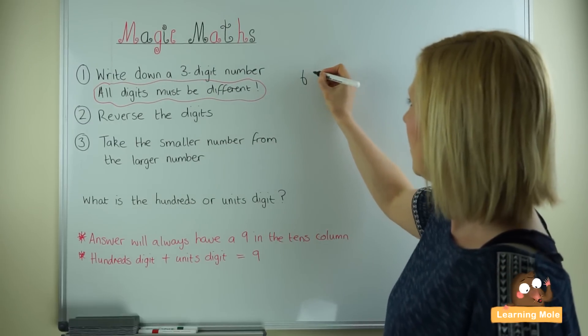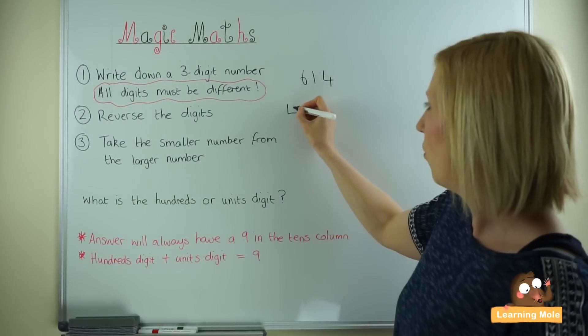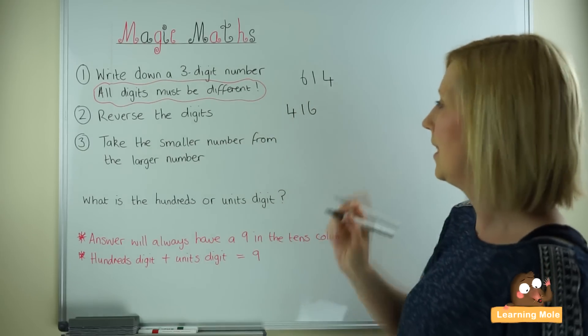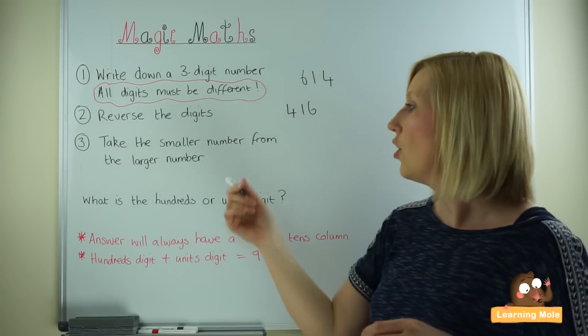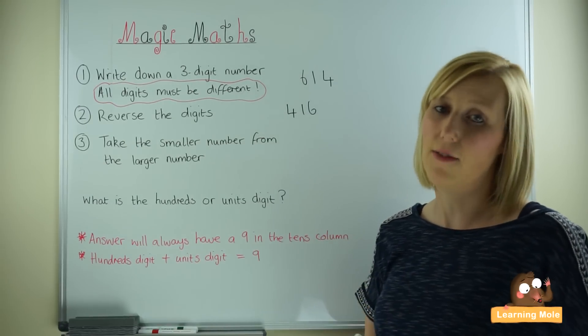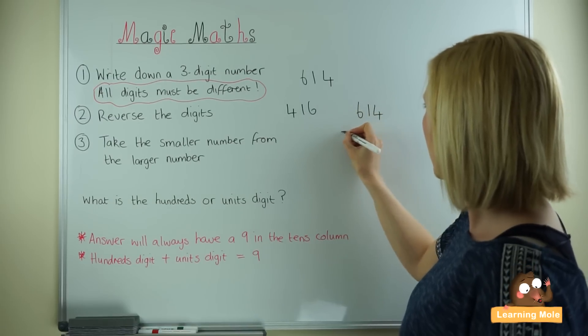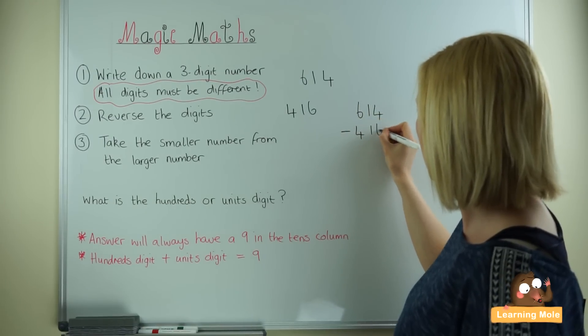I'm going to reverse the digits to get 416. Then I'm going to take away the smaller number from the larger number. And again, this adult is doing this in secrecy. So 614 take away 416.